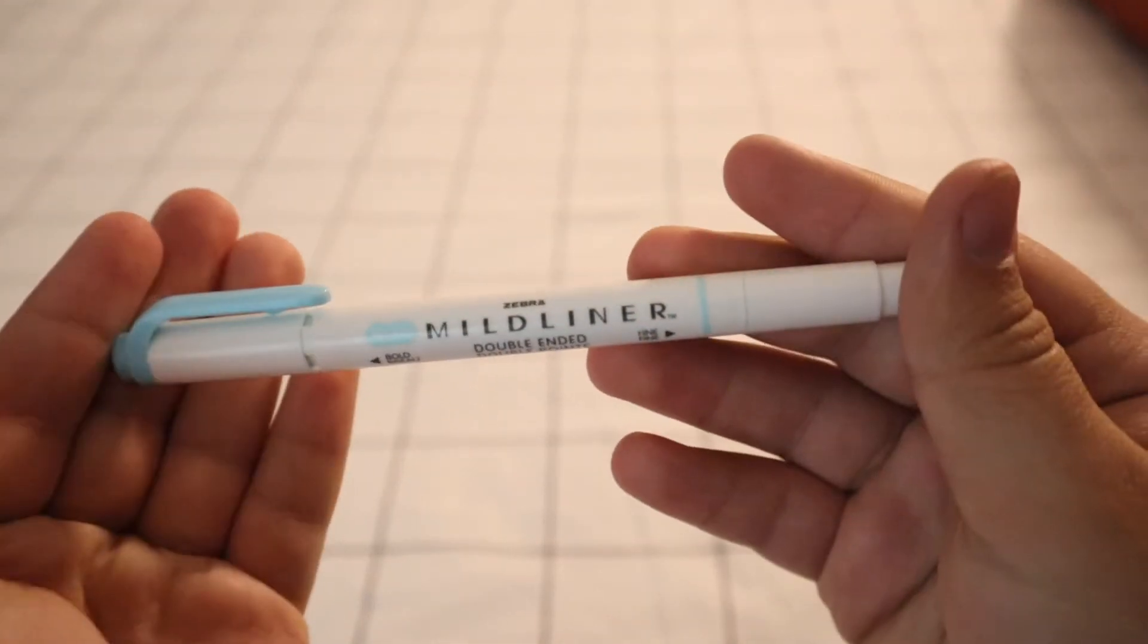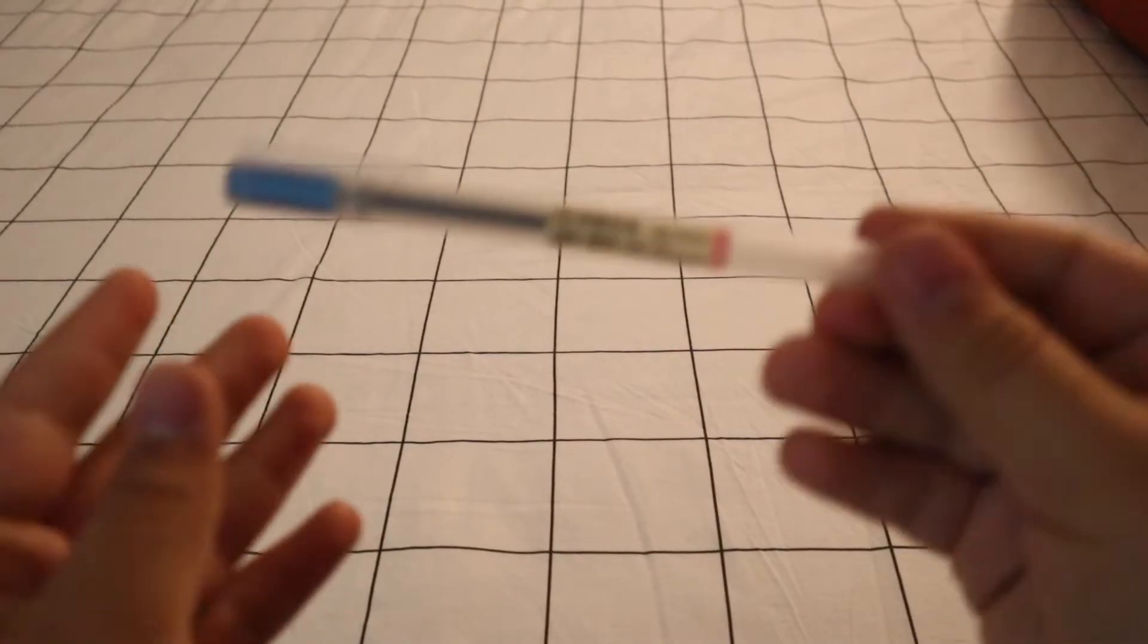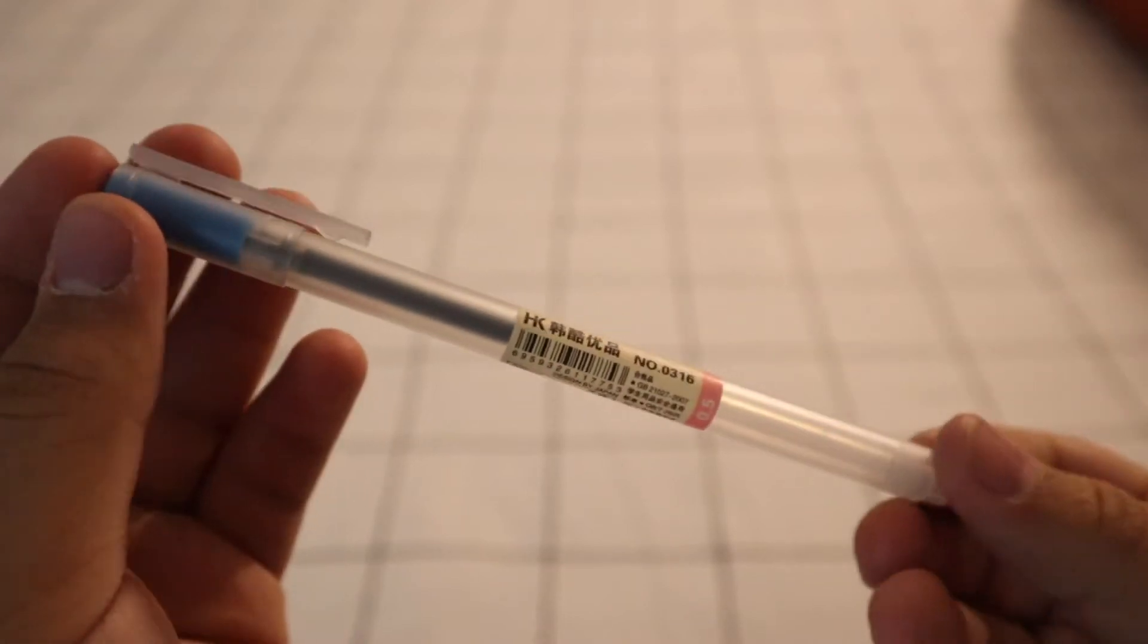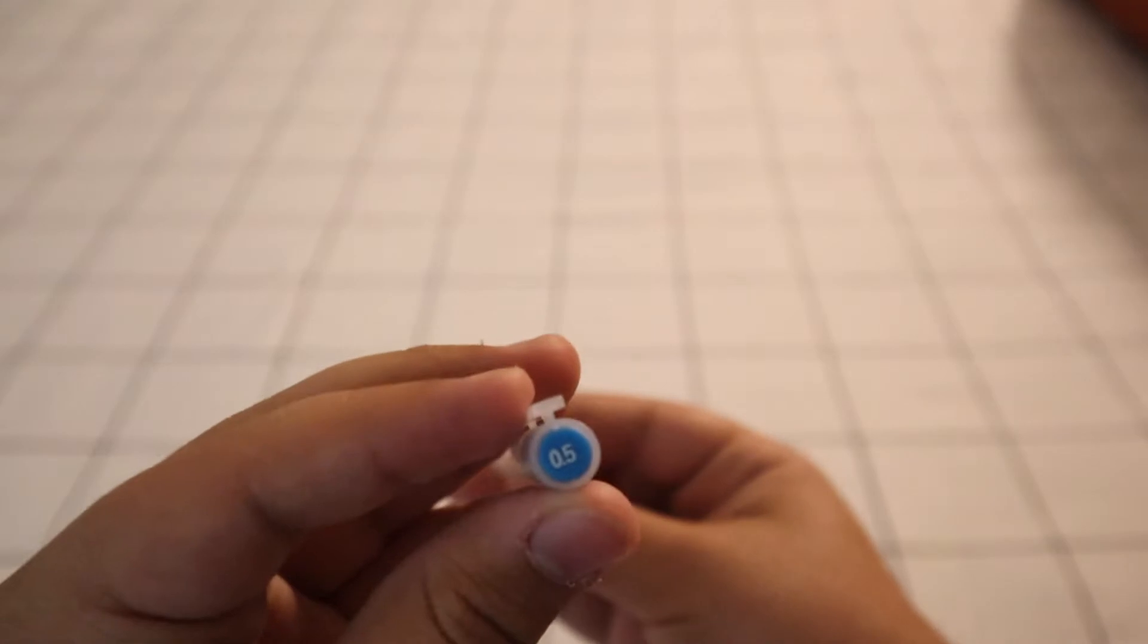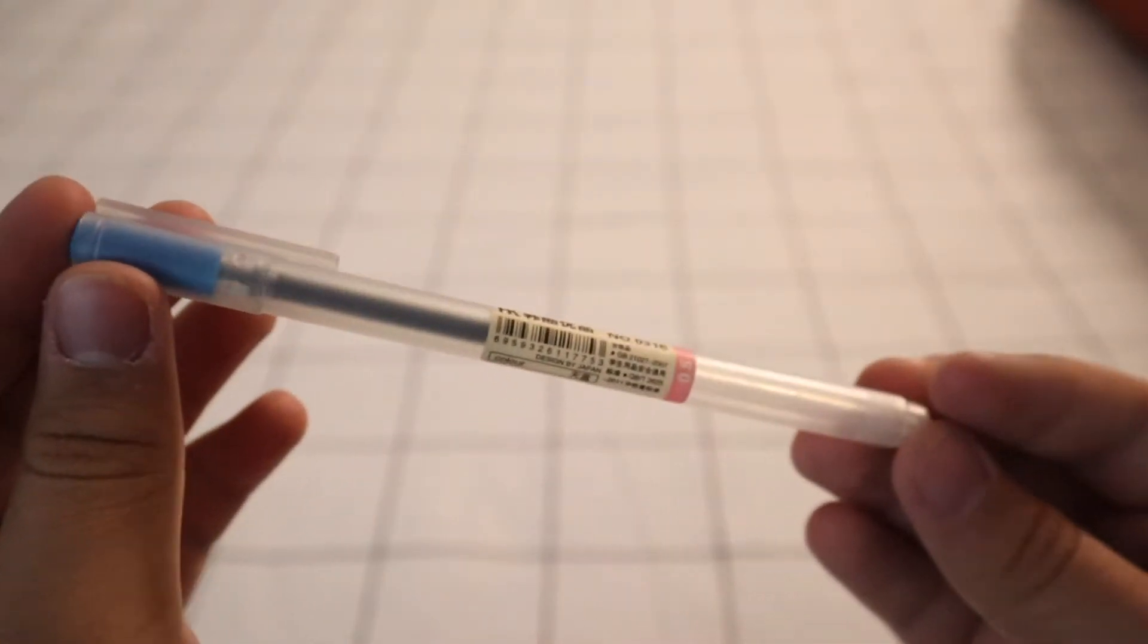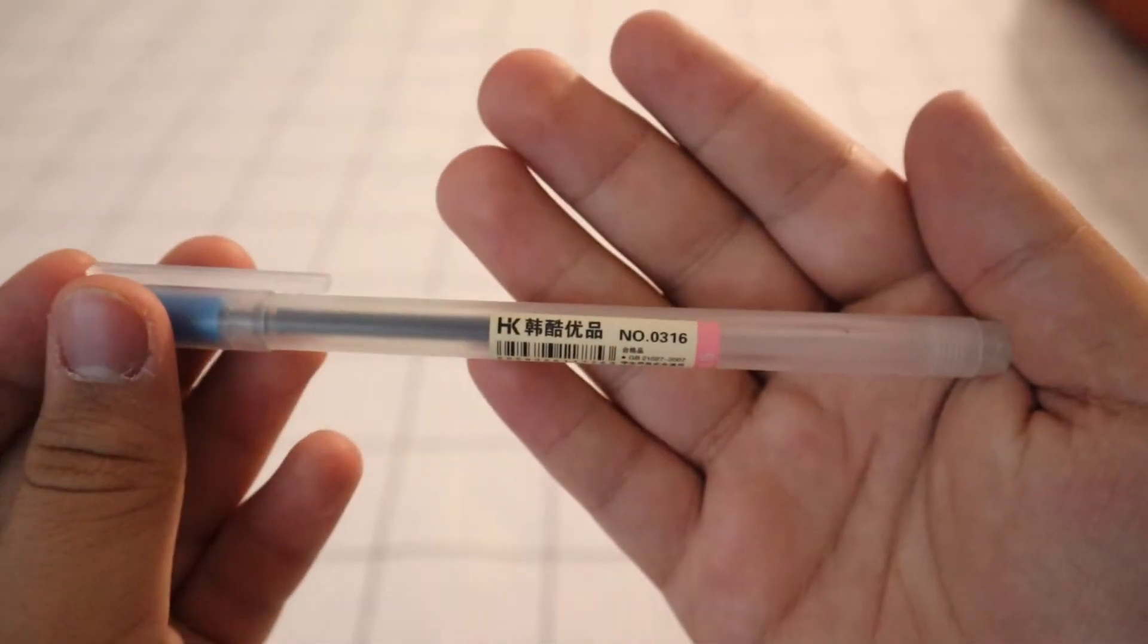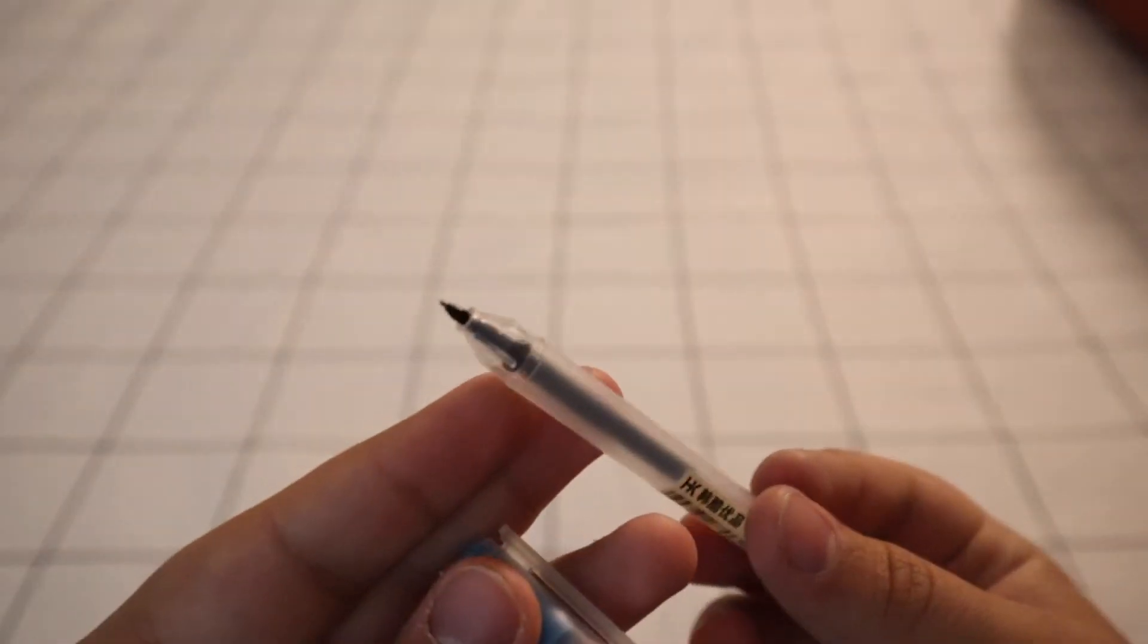Next is my Muji pens. These are also in 0.5. I have these in other colors as well. They are so good. They write smooth, they don't get stuck on the paper and they don't bleed either. Only downside is that they do smudge once you go over with highlighter, so you do have to let it dry out for a little bit. But yeah, I'll have these linked down below.